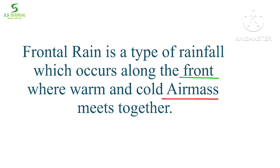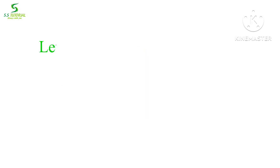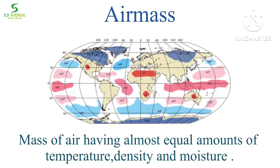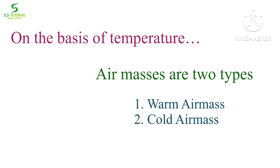In the definition of frontal rain we get two very important words: one is air mass and the other is front. Without clear knowledge of these two words we cannot understand the mechanism and process of frontal rain. Air mass is nothing but a mass of air having almost equal amounts of temperature, density, and moisture.